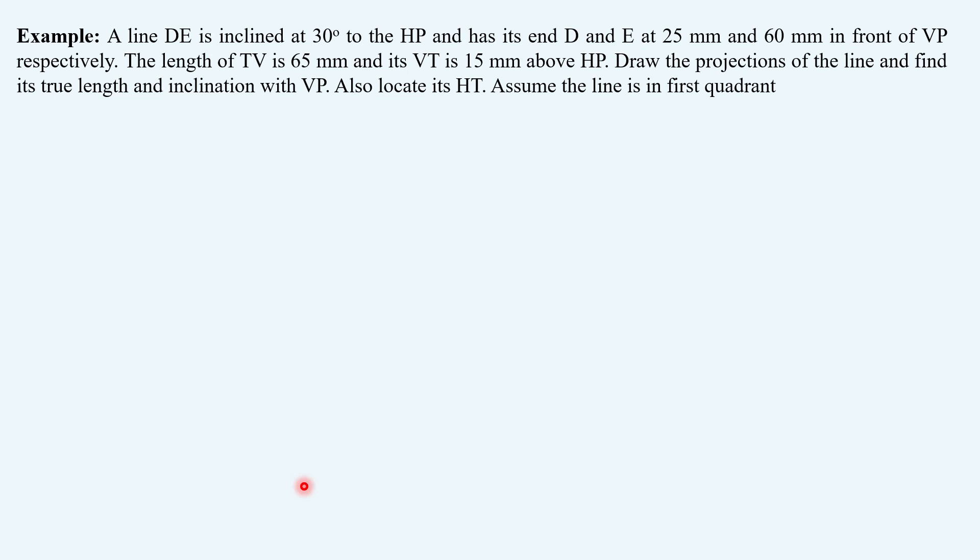Let's take an example for better understanding. A line DE is inclined at 30 degrees to the HP and has its end D and E at a distance of 25 mm and 60 mm in front of VP. The length of top view is 65 mm and its VT, that is vertical trace, is 15 mm above HP. Draw the projections of the line and find its true length and inclination with VP. Also, locate its HT, that is horizontal trace. Assume the line is in first quadrant.